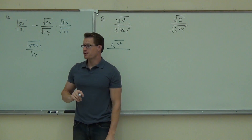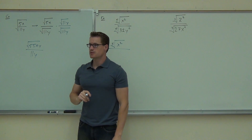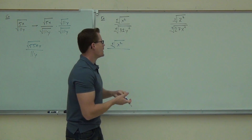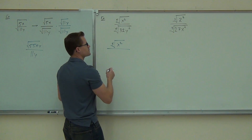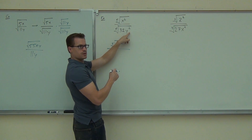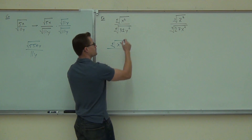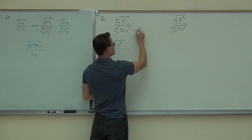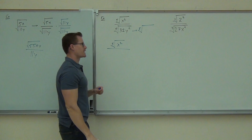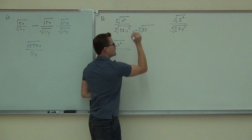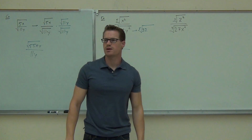Do you know what the fifth root of 32 is? Yeah, because 2 to the fifth power gives you 32. How about y to the 12th — can you simplify y to the 12th? Y squared comes out, y squared on the outside, y squared inside. How am I going to break that up so that I can simplify it? Of course the 32 I'm going to leave. Let's break up y to the 12th and go through this process.